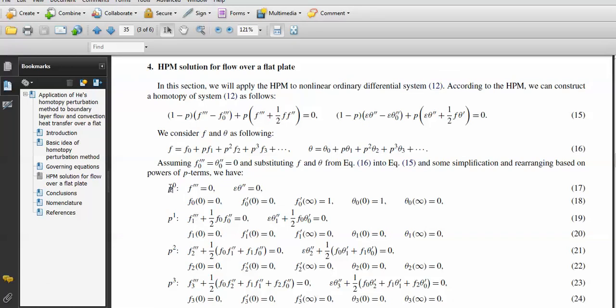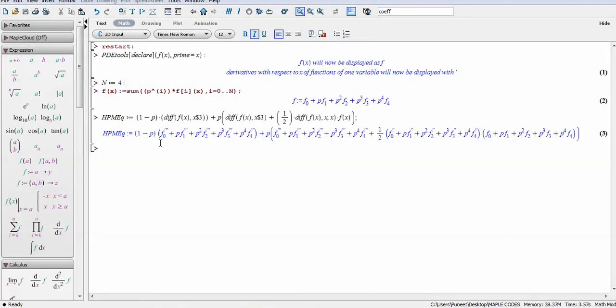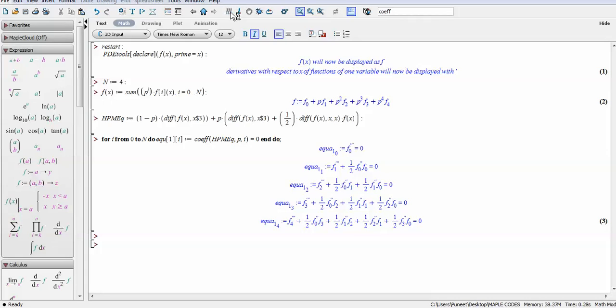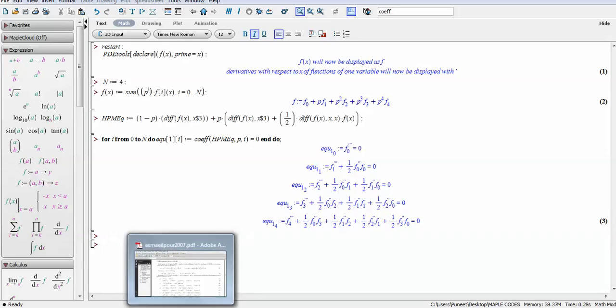Next, now we wish to find the coefficients of p. The coefficients will be calculated by using the for loop. When we write for, the command is easy: i from 0 to number of terms n, do equation command. I can write the equation eq[i] so we can write the coefficient hpm_eq coefficient p and i. We will put the coefficient equal to zero then we will finish this for loop. You run this, it will show this type of output.